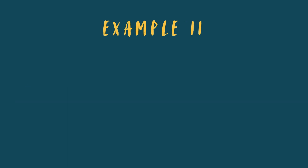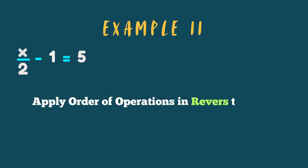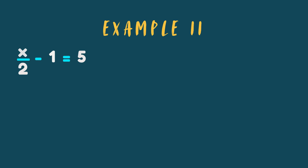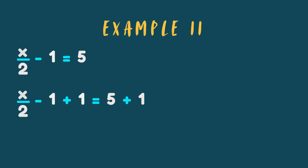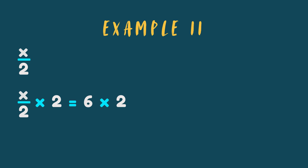Let's solve another two-step equation that has division and subtraction: x divided by 2 minus 1 equals 5. We apply the order of operations rules in reverse — first undo the subtraction, then undo the division. To undo the subtraction, we add 1 to both sides. The minus 1 and plus 1 cancel out, leaving x over 2, and on the right side 5 plus 1 gives us 6. In the second step, we undo the division by multiplying both sides by 2. The 2s cancel out, leaving x, and 2 times 6 gives us 12. So finally, x equals 12.